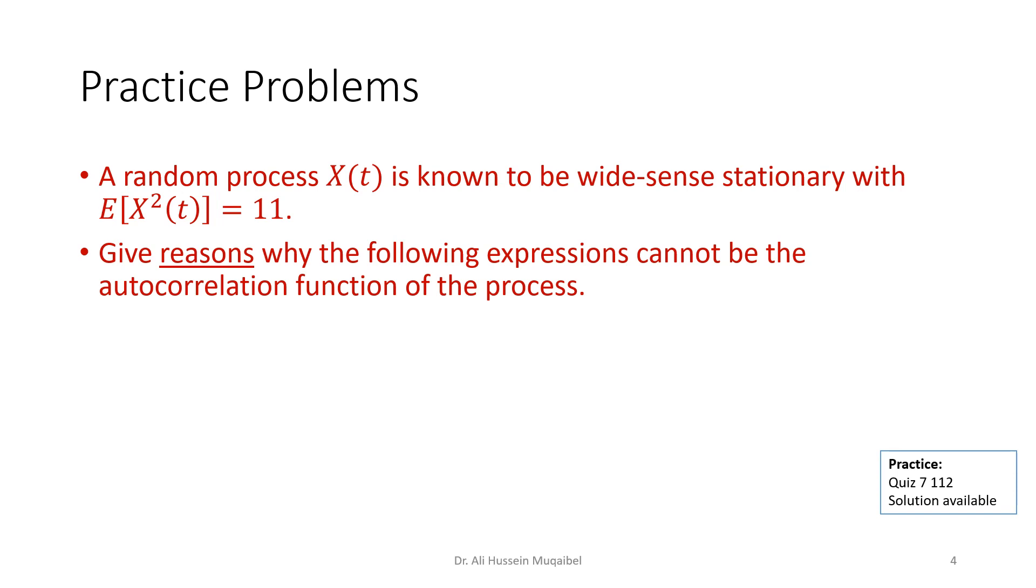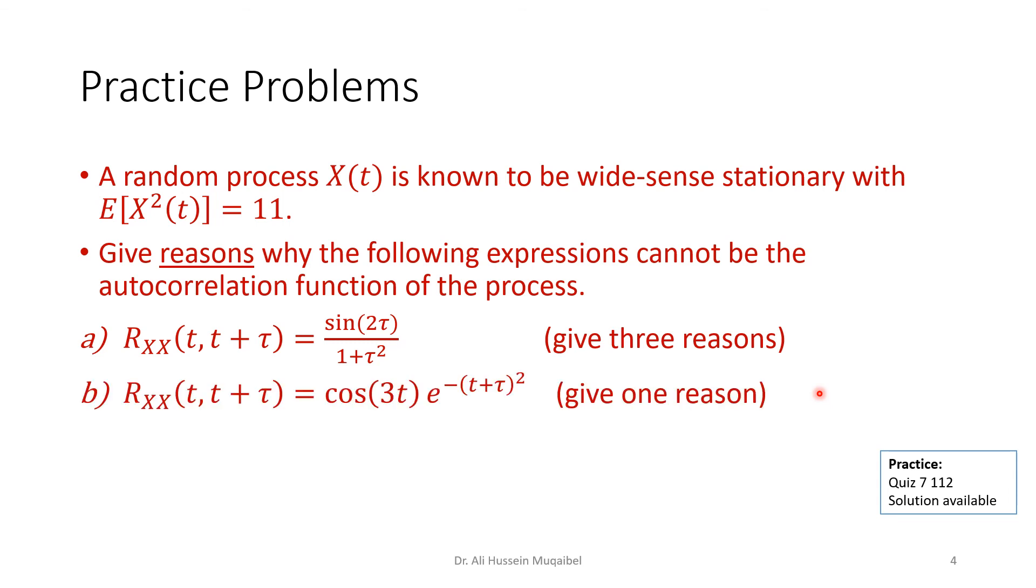Now, let's conclude this part with a practice example. A random process X(t) is known to be wide-sense stationary with the expected value of X² equal to 11. Give reasons why the following expressions cannot be the autocorrelation function of this specific process. So the first expression is this. The autocorrelation is sin(2τ) over (1 + τ²). This is not a valid autocorrelation for the previous random process. You can give three different reasons. Please write them down. And once you're done, look at the second example, example B. And why, at least give one reason why this is not a valid correlation function for the given random process. Please share your answer in the comment section. Thank you very much.